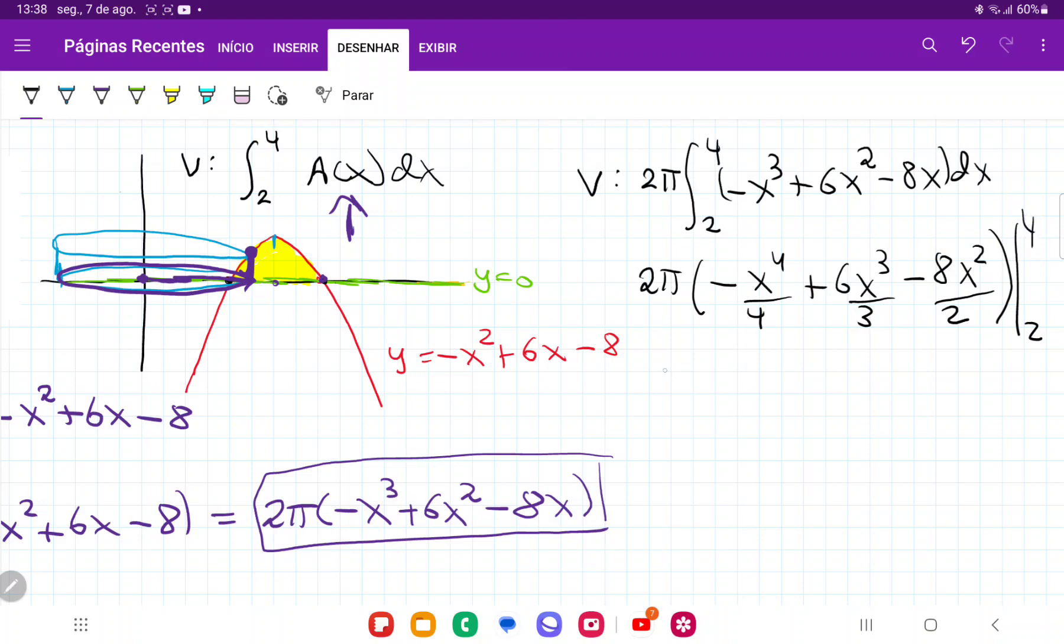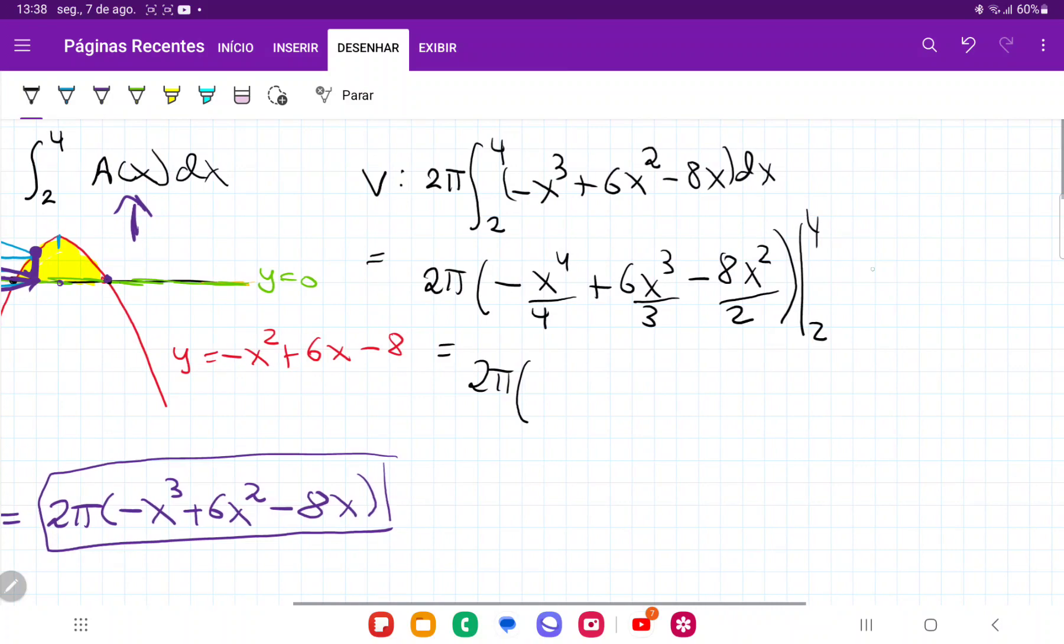So let's see. This is going to give us, which is equal to, 2 pi. I'm going to evaluate everything at 4. Okay, so I'm going to put in whenever I see x, I'm going to put 4. And so this is going to give me minus 64 plus 128 and then minus 64.